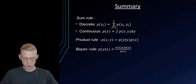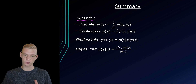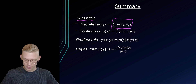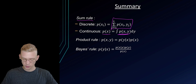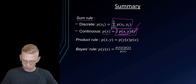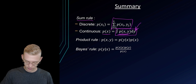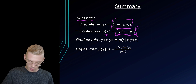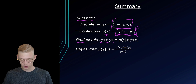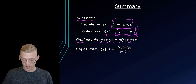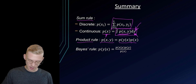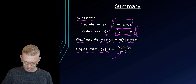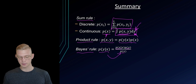To summarize: we have the sum rule in both discrete and continuous cases. In the discrete case we sum over the variable we marginalize over. In the continuous case, we take the integral over y. We also have the product rule: the joint probability of x and y is the probability of y given x times the probability of x. And again the Bayes rule: probability of y given x equals probability of x given y times probability of y, divided by probability of x.